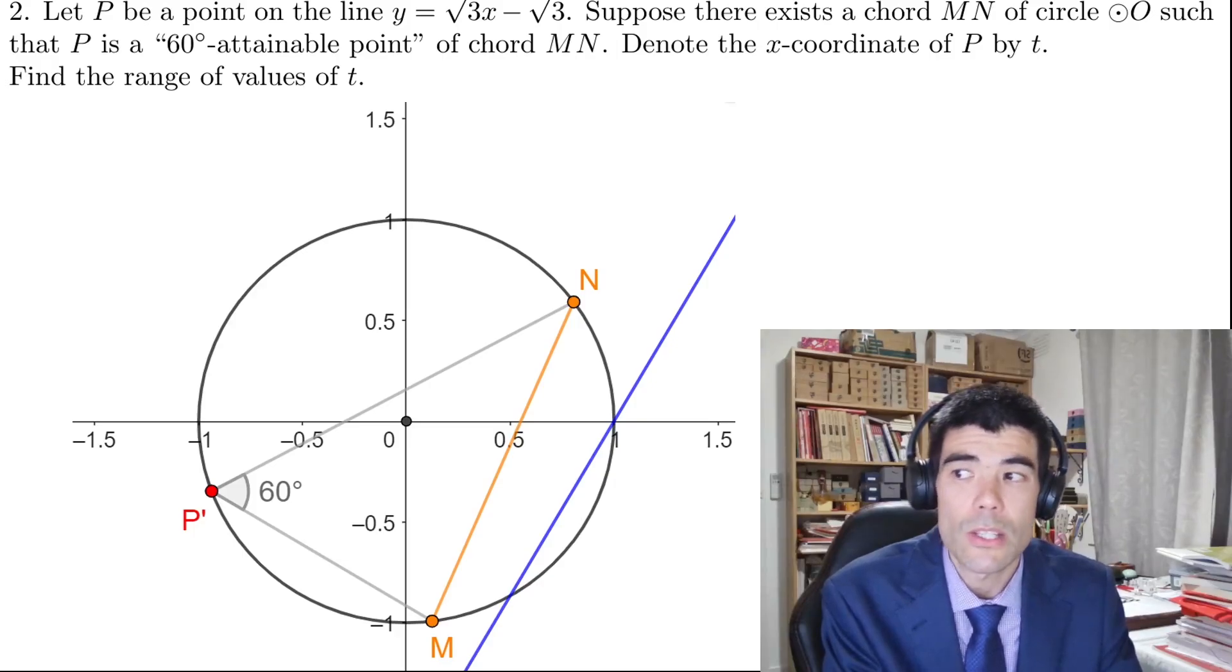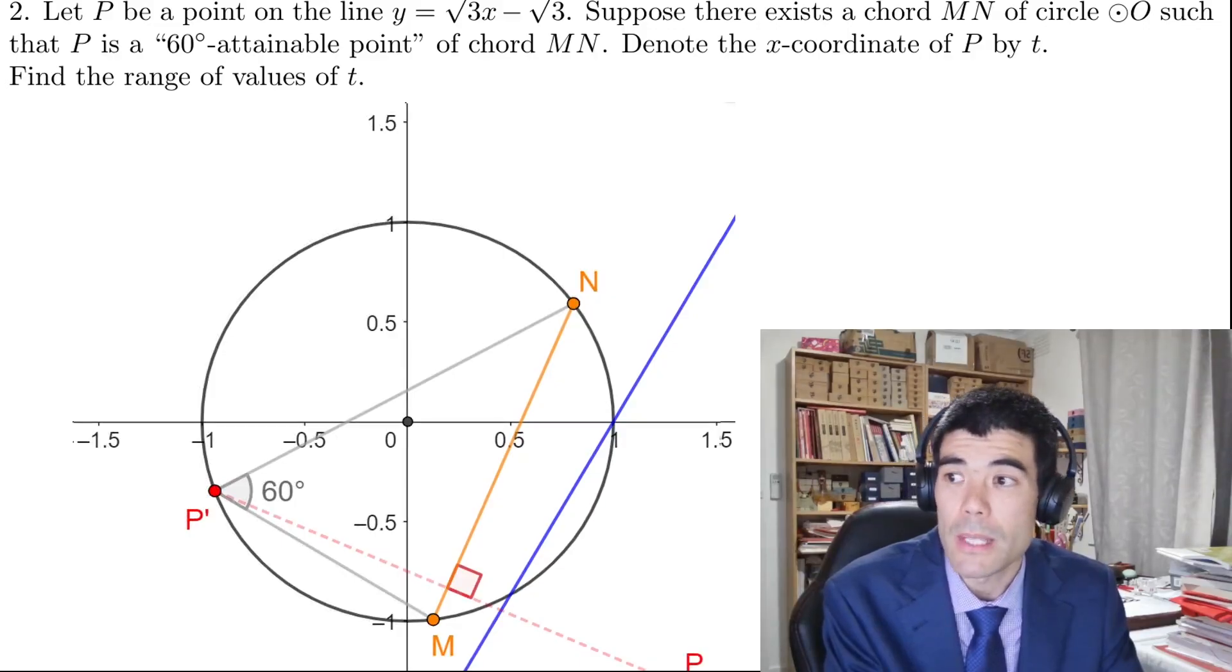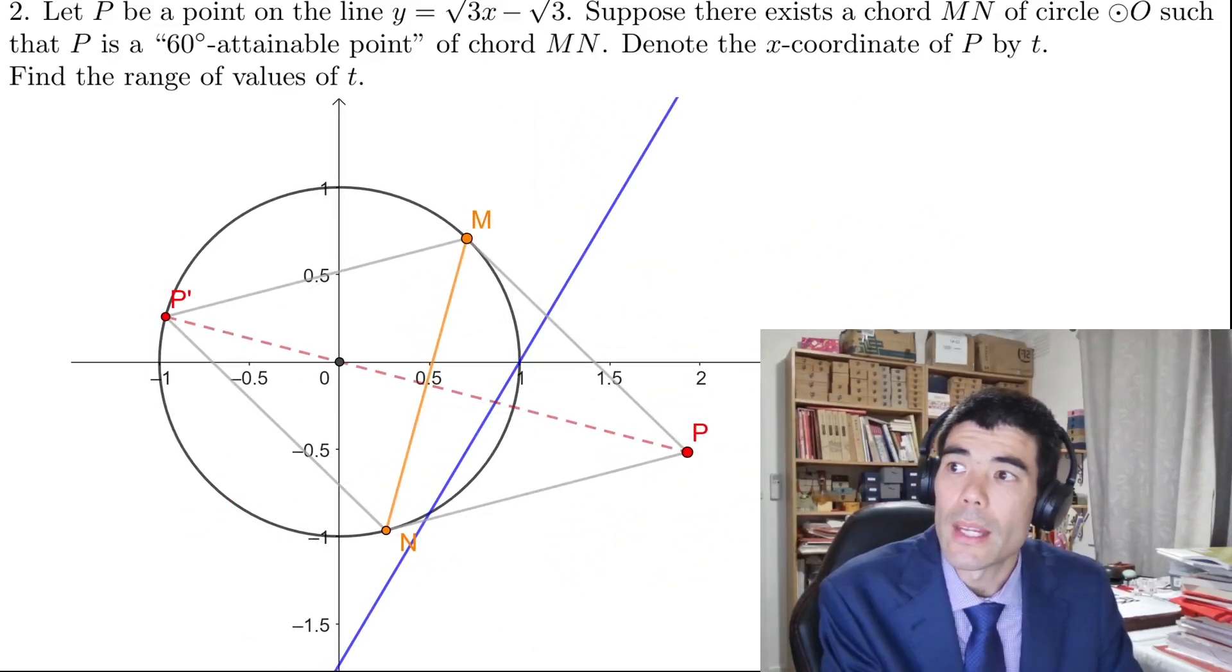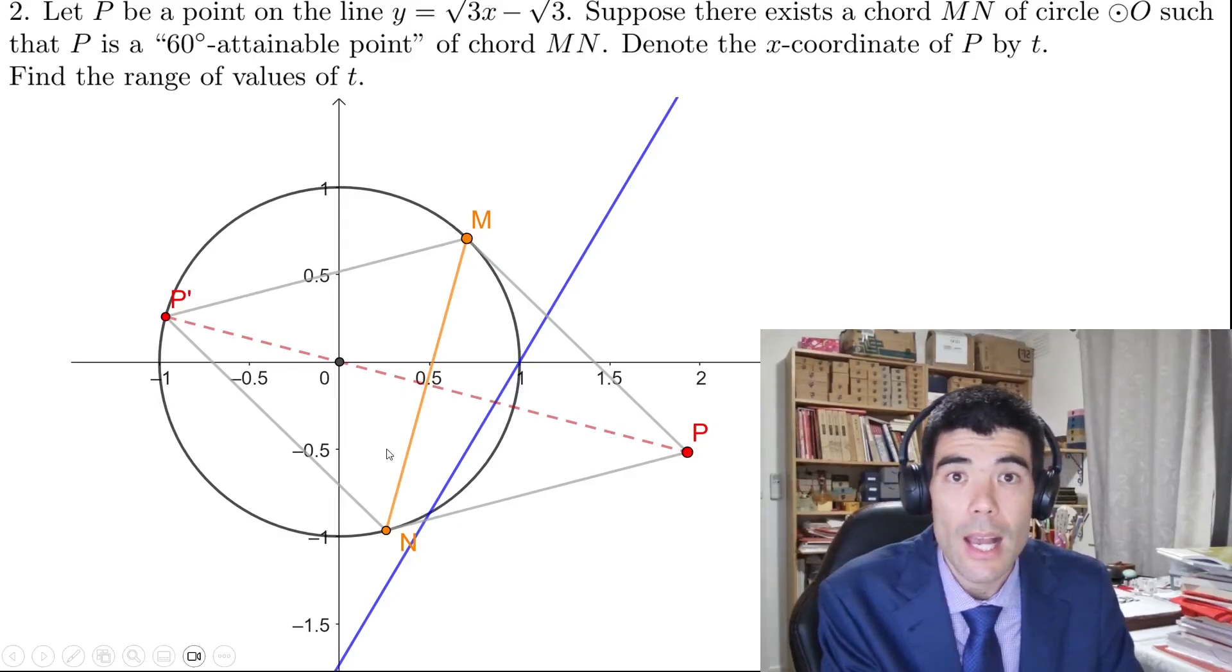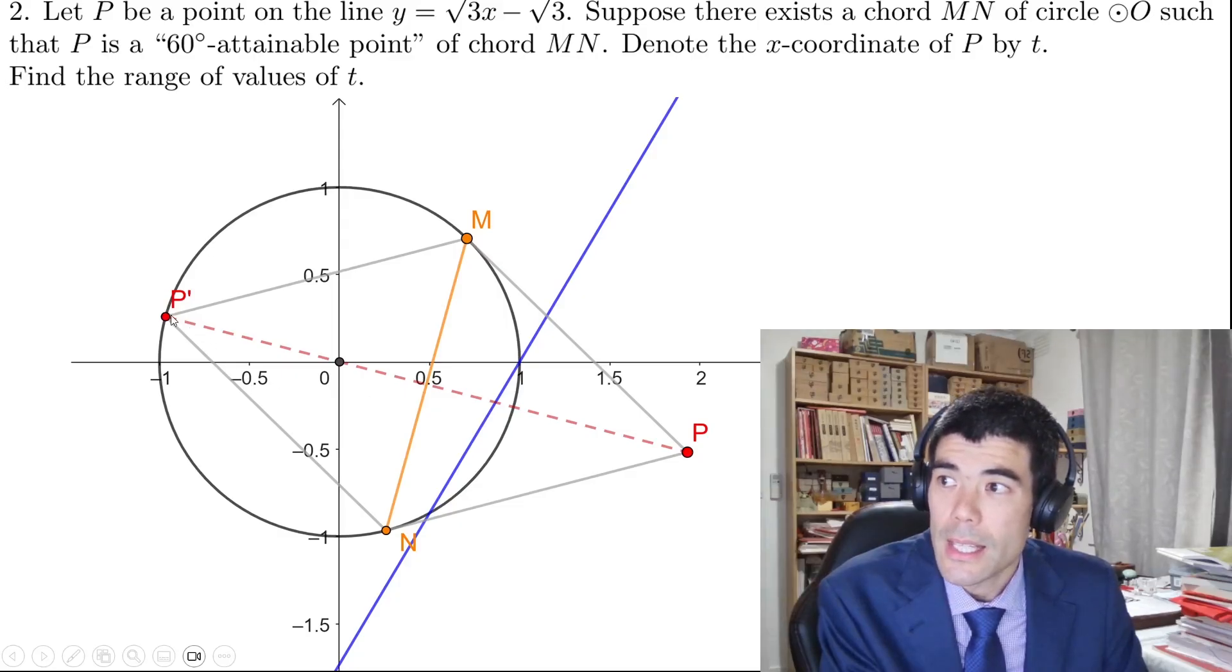this angle has to be 60 degrees. But if we think about the reflection P, we want that distance P P' to be as large as possible. That's going to happen when these two distances are equal. And then this triangle will be not only isosceles but also equilateral. This line segment P P' will pass through the center of the circle and this distance will be exactly three units.